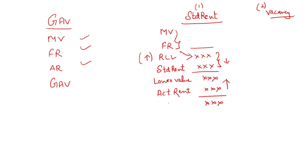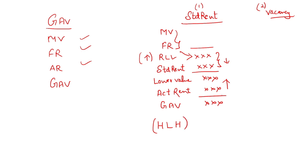From the lower value and Actual Rent, whichever is higher becomes your GAV. So the formula is: Higher → Lower → Higher. Use this formula only when Standard Rent is given in the question and there is no vacancy period.